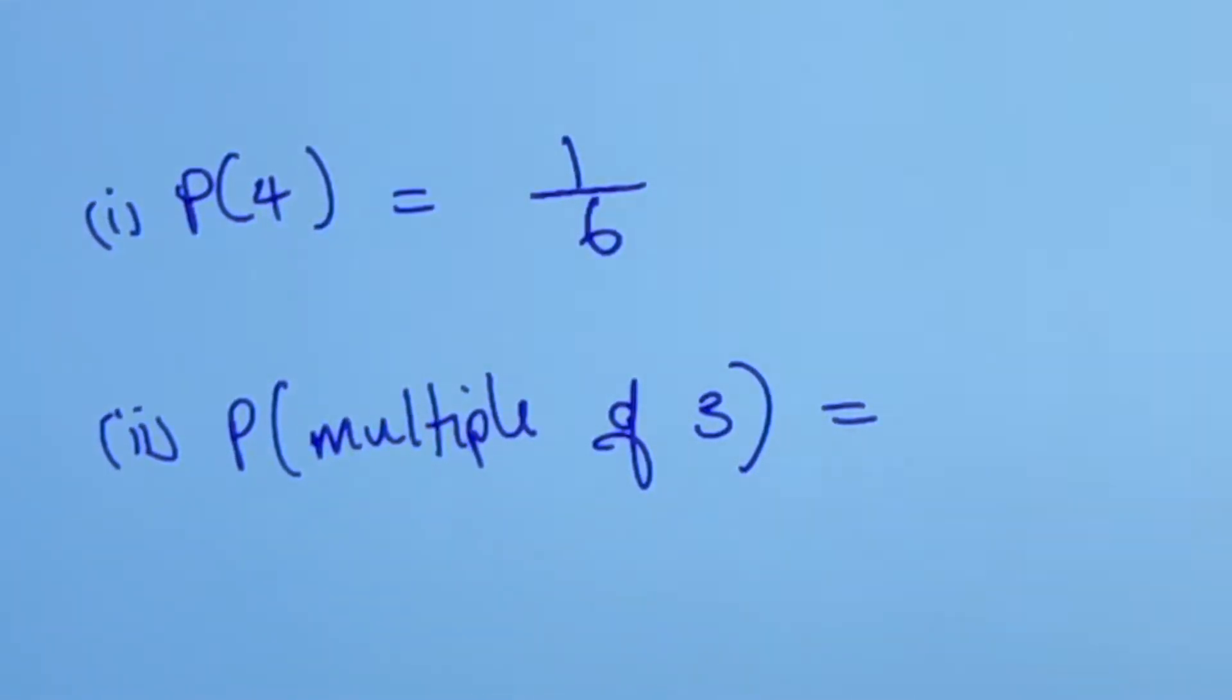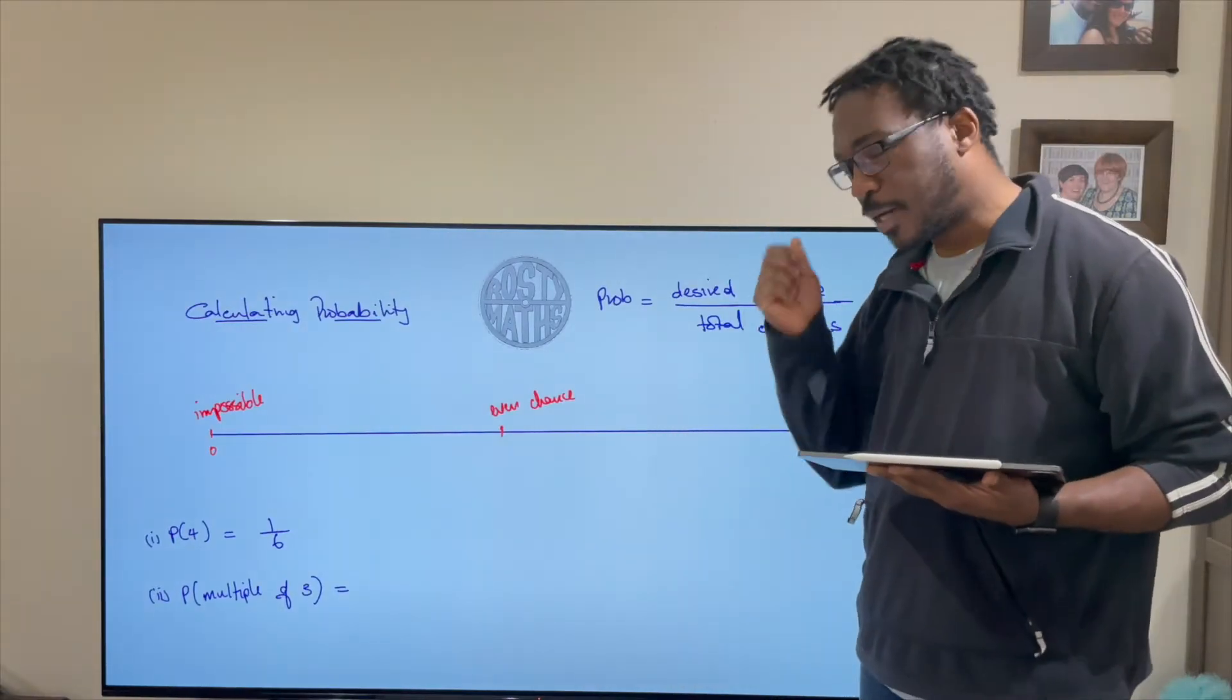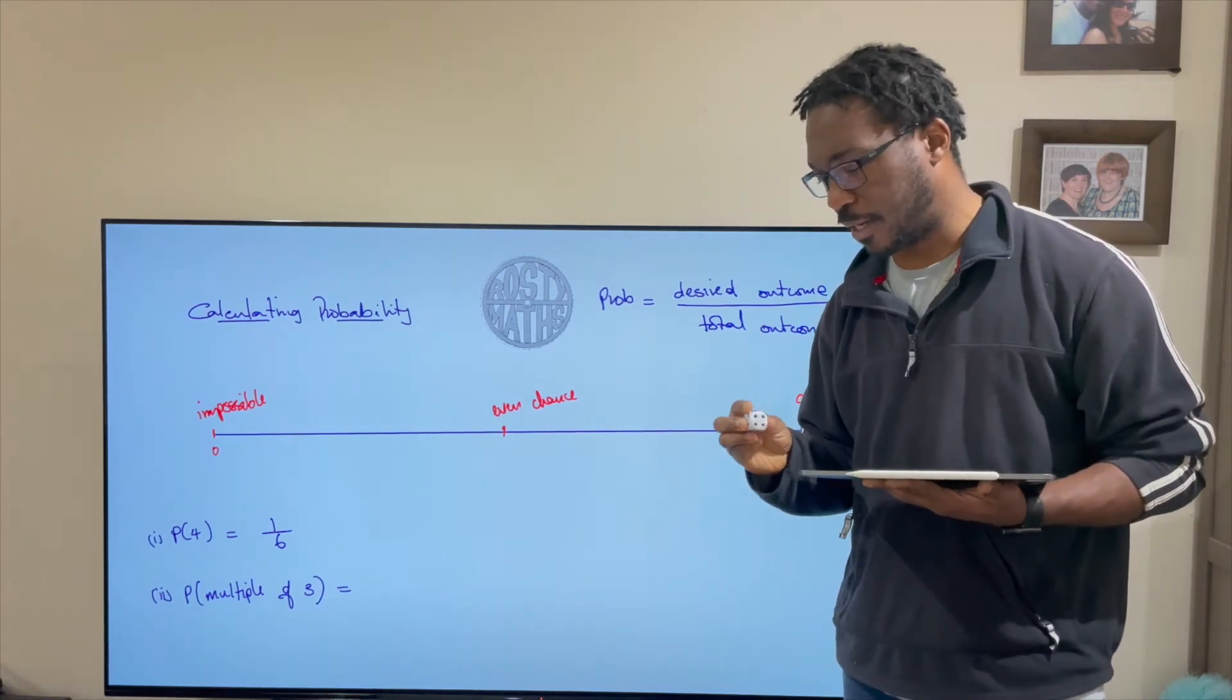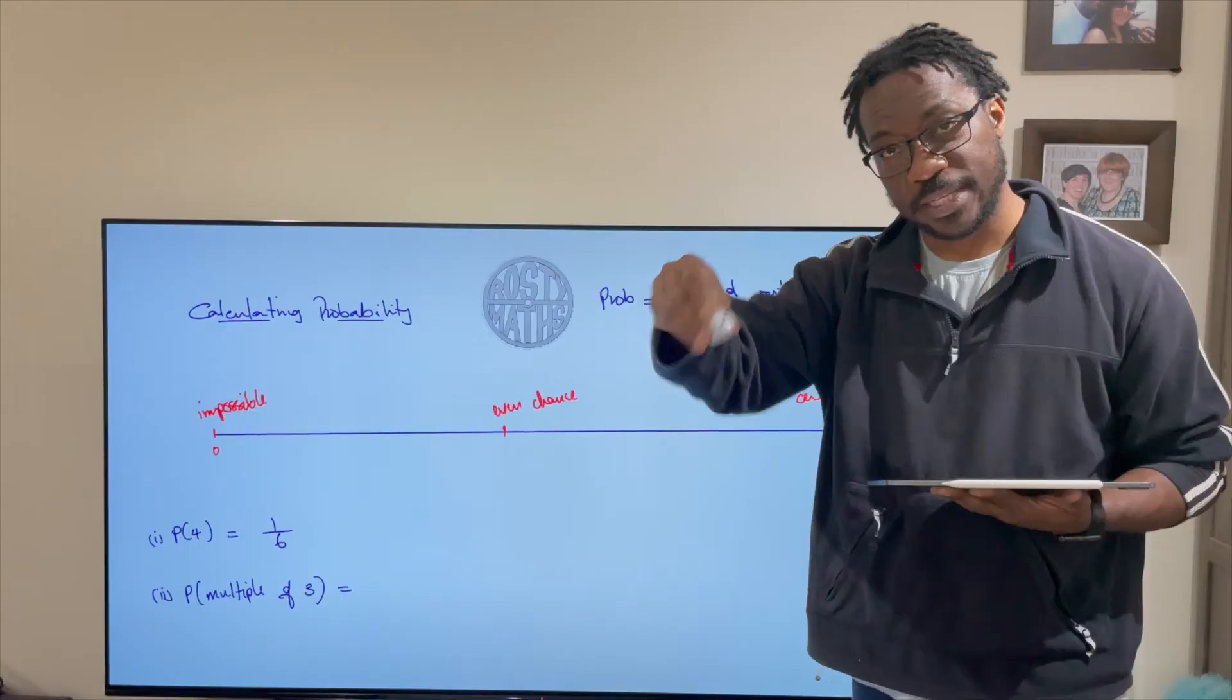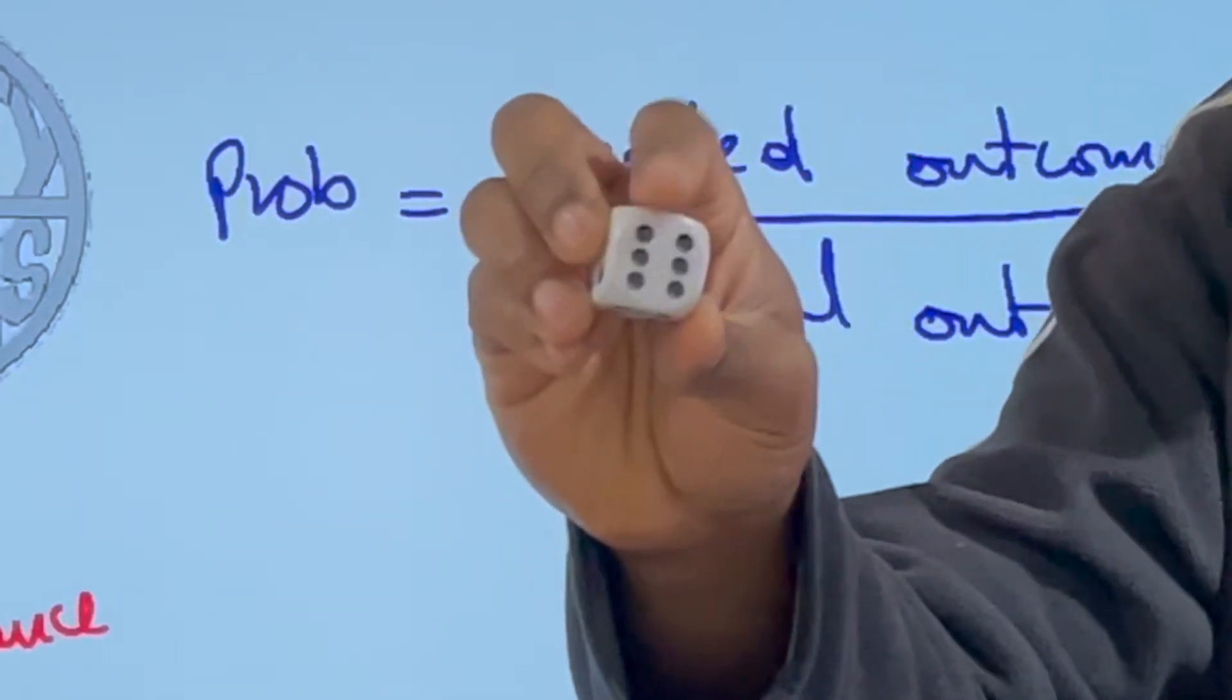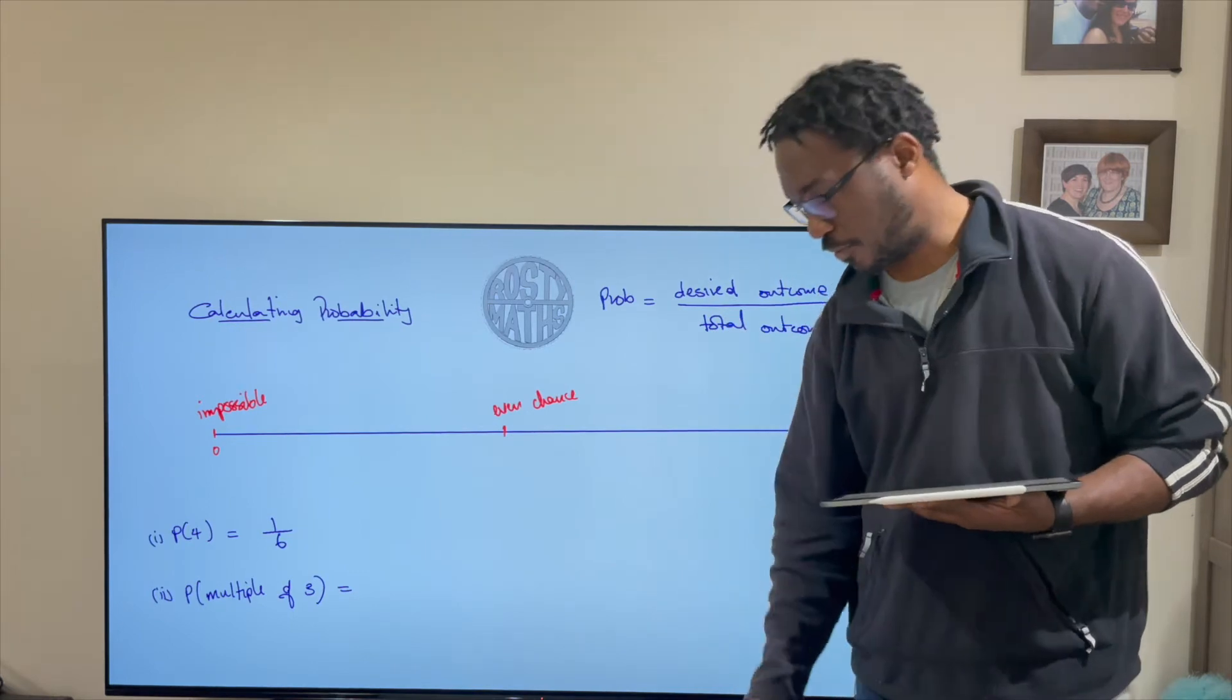So in this bottom one here I have got to find a multiple of three. So here I got my dice again. How many multiples of three I've got? Well I have got the number three that's a multiple of three and the number six is also a multiple of three. So there are two multiples of three.